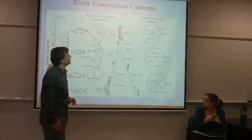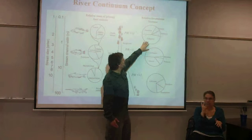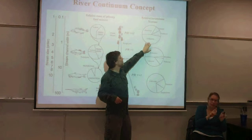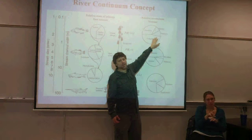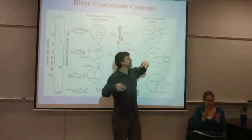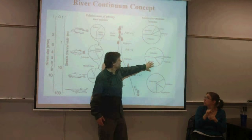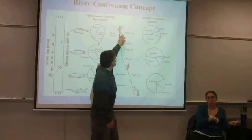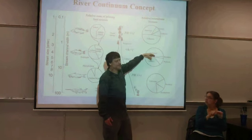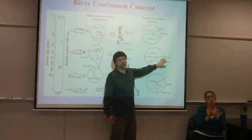Looking at the macroinvertebrate communities, high up in the system these shredders are quite important, and things that are collecting particles are quite important. Grazers aren't really dominant because there's not a lot of algae growing — the stream's covered most of the time. As we move downstream, the grazers take on increasing importance because the particulate materials are coming out from these organisms.